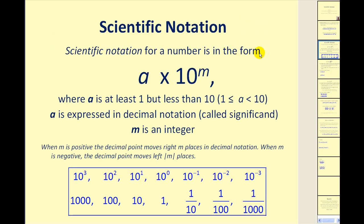Scientific notation for a number is in the form of A times 10 to the power of M, where A is a number in decimal form that is at least 1 but less than 10, and M, the power on 10, must be an integer.